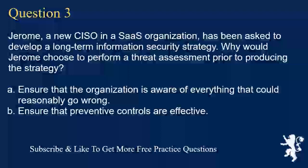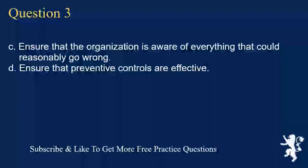Question 3. Robert has located his organization's mission statement and a list of strategic objectives. What steps should Robert take to ensure that the information security program aligns with the business? A. Discuss strategic objectives with business leaders to understand better what they want to accomplish and what steps are being taken to achieve them. B. Develop a list of activities that will support the organization's strategic objectives and determine the cost of each. C. Ensure that there are no unidentified vulnerabilities. D. Ensure that there are no unidentified risks.